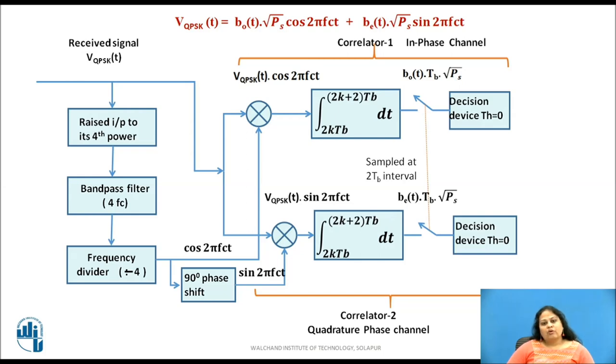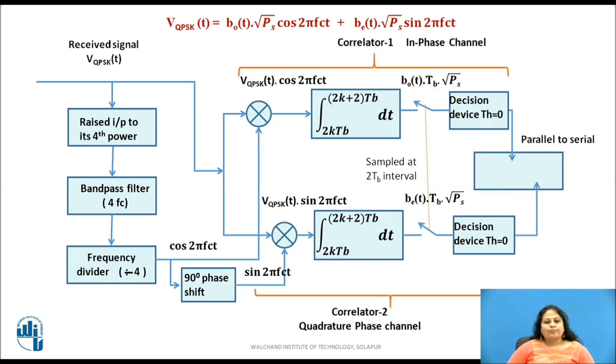Thus, the two correlators act as two BPSK demodulators which extract in phase data bits that is odd data stream and quadrature phase data bits that is even bit stream. The output of both the decision device are then applied to parallel to serial converter. The bit obtained from the correlator 1 is in phase data bit or odd numbered data bit. Whereas, the bit obtained from correlator 2 is quadrature phase data bit or even numbered data bit. Both these bits are obtained during each symbol duration.